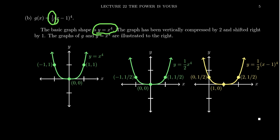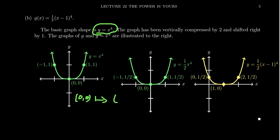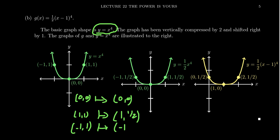Now what transformations have we done to x to the fourth? This factor of one half in front is doing a scale change — we've compressed the y coordinate by a factor of two. So if we think about what happens to the origin, when you vertically compress it, you multiply all of the y coordinates by one-half. Since zero times one-half is still zero, there's no change at the origin. On the other hand, if you take the point 1,1, you cut its y coordinate in half, so you get the point one comma one-half. Same thing for negative 1,1 — you end up with negative one comma one-half.